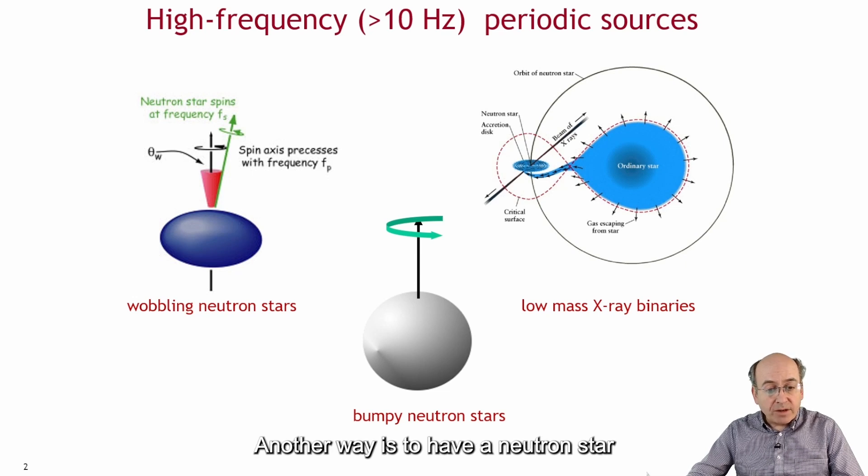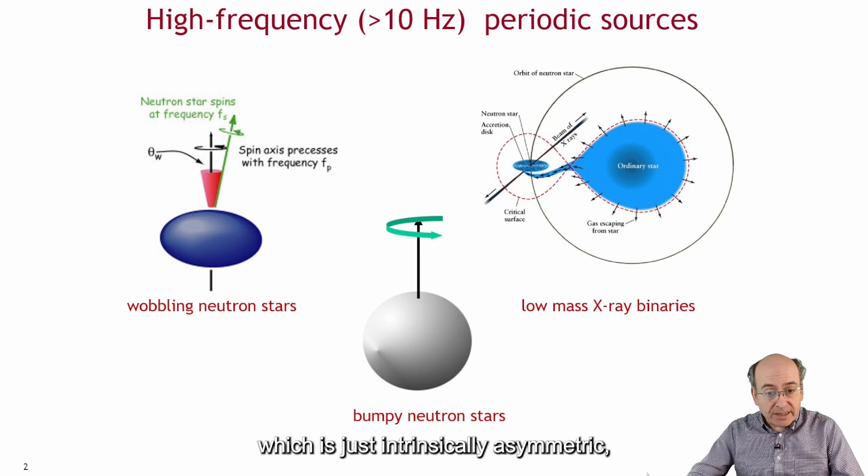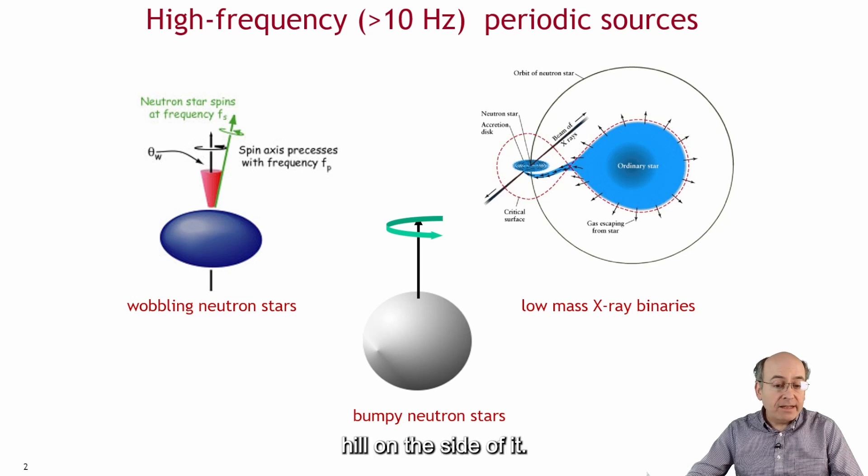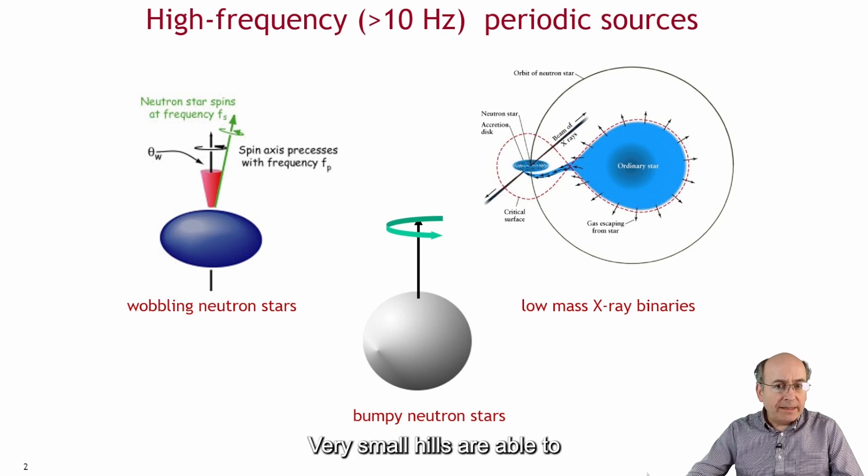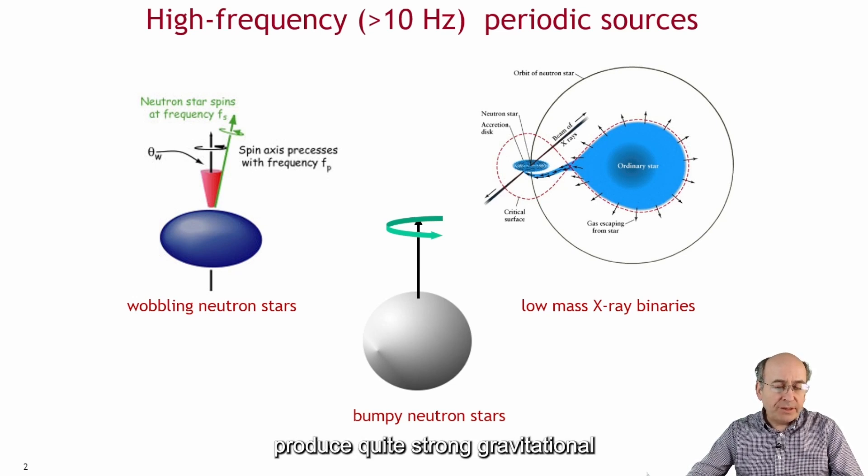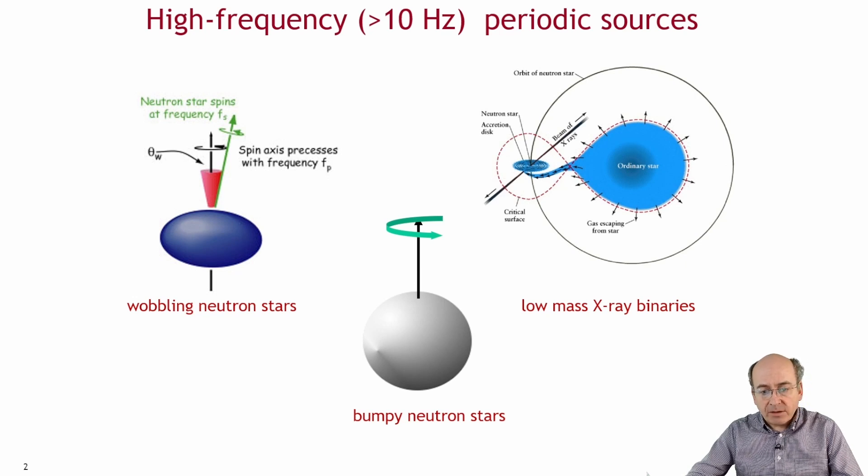Another way is to have a neutron star which is just intrinsically asymmetric. So maybe it has a small hill on the side of it. And here's an example of what that might look like. Very small hills are able to produce quite strong gravitational wave signals as we'll see.